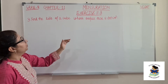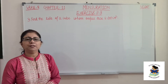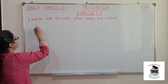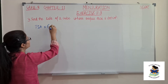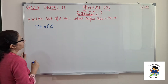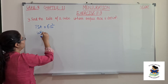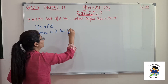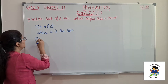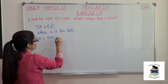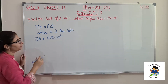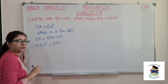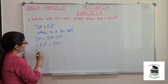Find the side of a cube whose surface area is 600 cm square. As we know, the total surface area of a cube is 6a square, where a is the side. So the area given to us is 600 cm square. That means 6a square should be equal to 600. So now what is a square?